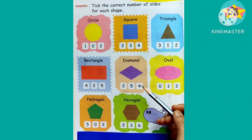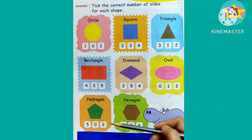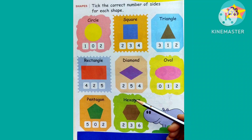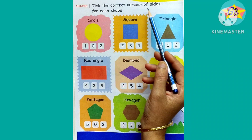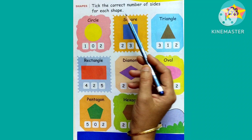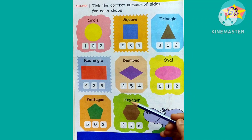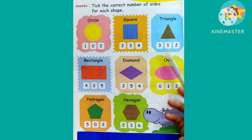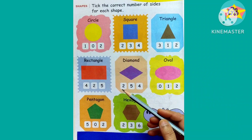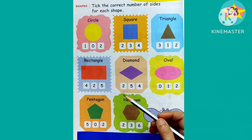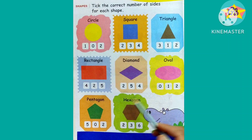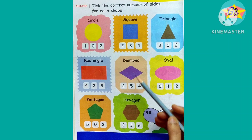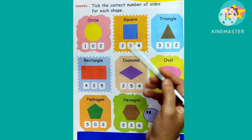In this worksheet, we are given some shapes because our topic is shapes. We have to tick the correct number of sides for each shape. Each shape has its own sides and corners, but in this exercise we just have to find out the number of sides.